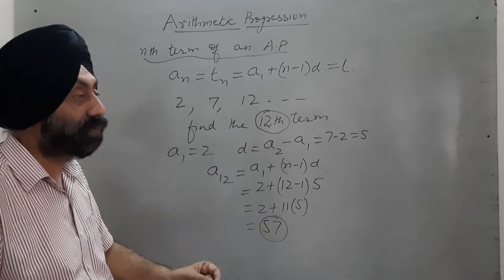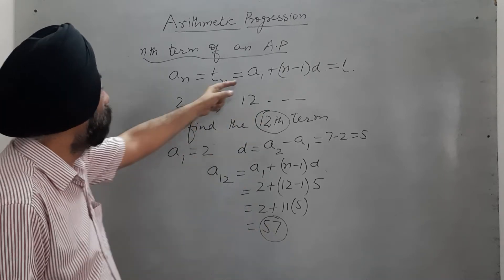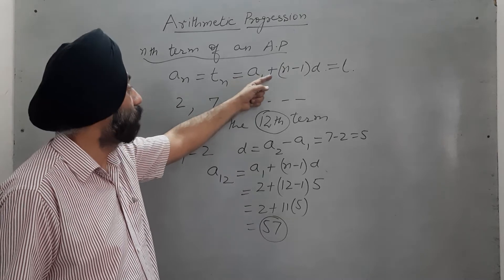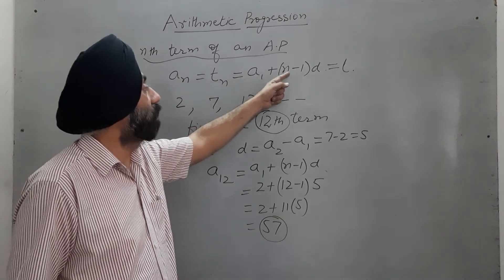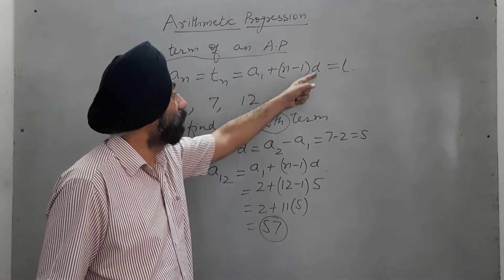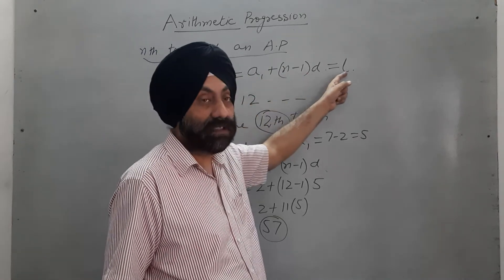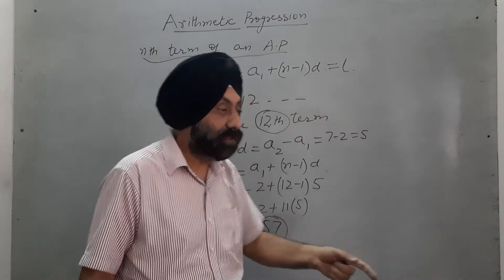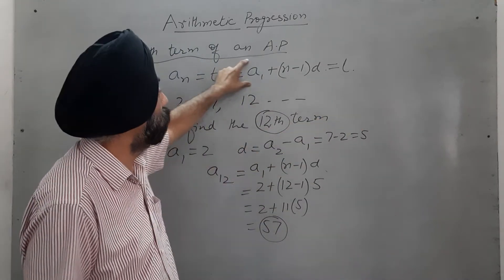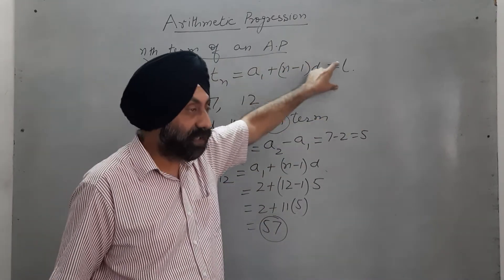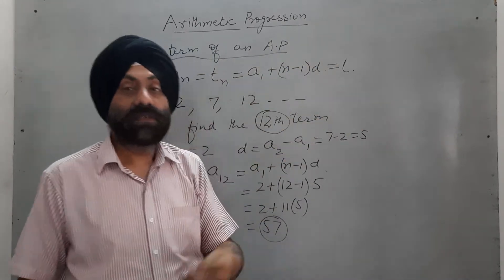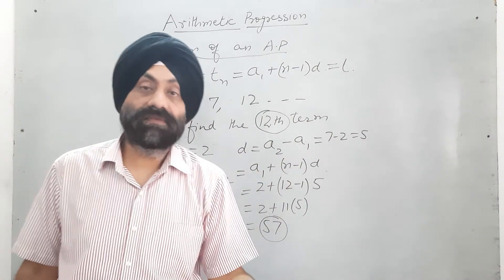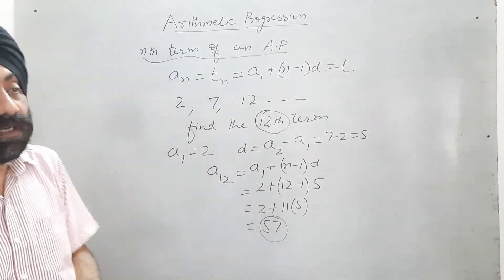The only formula used is A₁ + (n minus 1) × D — that is, first term plus (n minus 1) into common difference. Using this formula we can calculate the 12th term, the 3rd term, the 5th term, and so on.